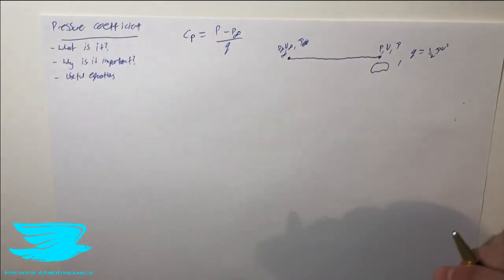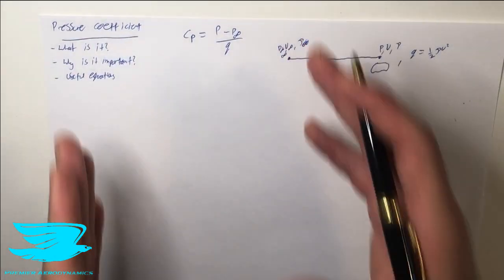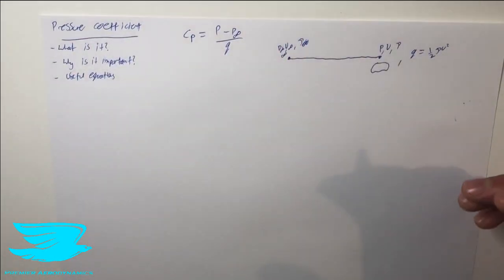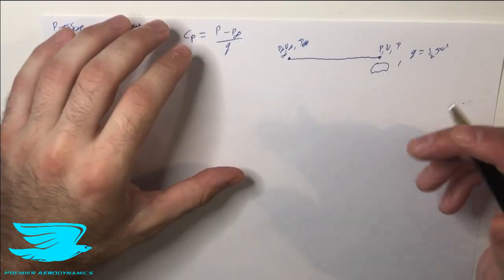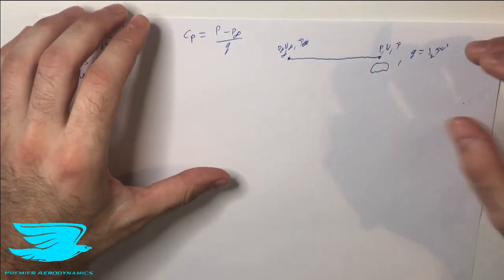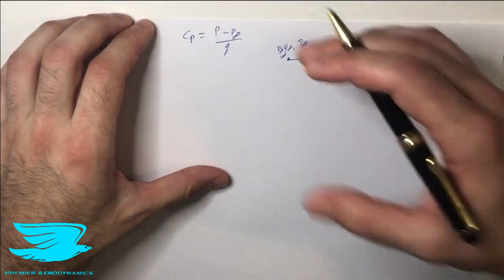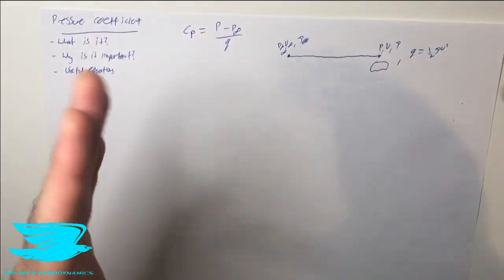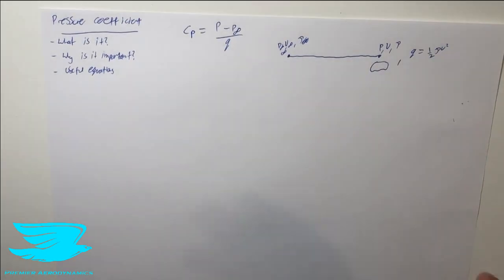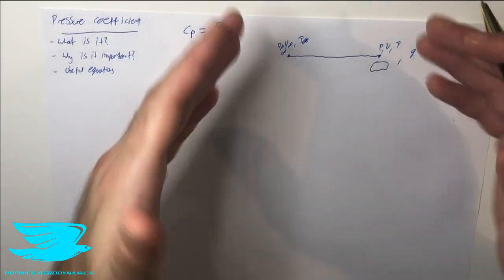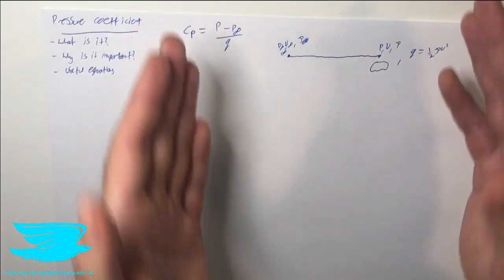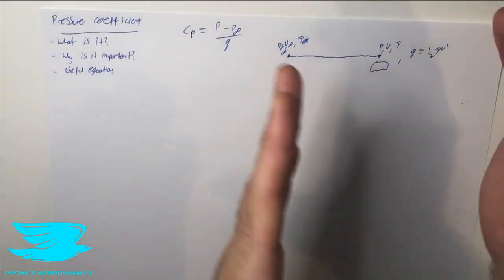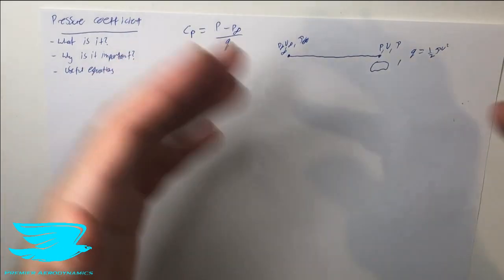So that's what the pressure coefficient is. What is it from a theoretical point of view? On the bottom we have the dynamic pressure, and on the top we have the difference between the pressures felt in the flow at two different points — the free stream flow and another point somewhere else.